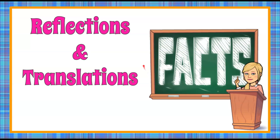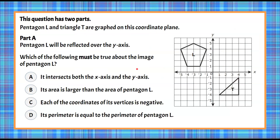It's the Magic of Math here, and today we're talking facts — facts about reflections and translations. Here's our question today. This question has two parts. We have pentagon L and triangle T that are graphed on this coordinate plane.